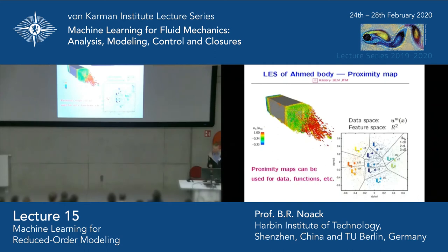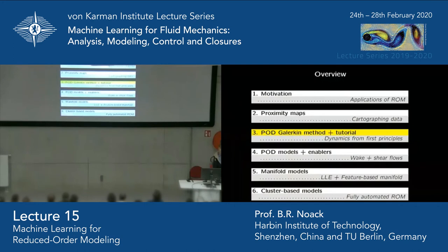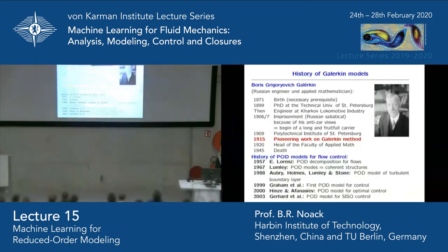You can also apply proximity maps to functions, to many other things — we apply it to controllers, as we have seen in my first talk. Now we go to the first real reduced order model: the POD-Galerkin method.